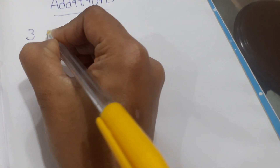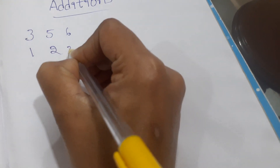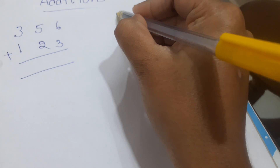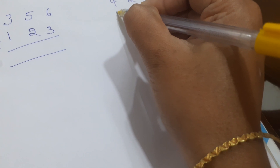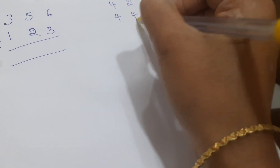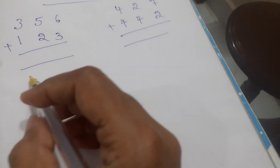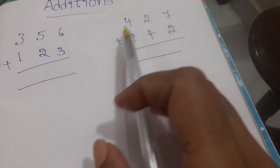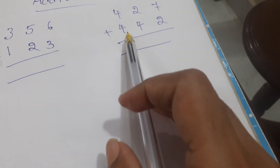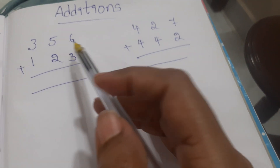Hi friends, now how to add three digit additions. First one: we have to add 356 and 153. Second one: 427 and 442.